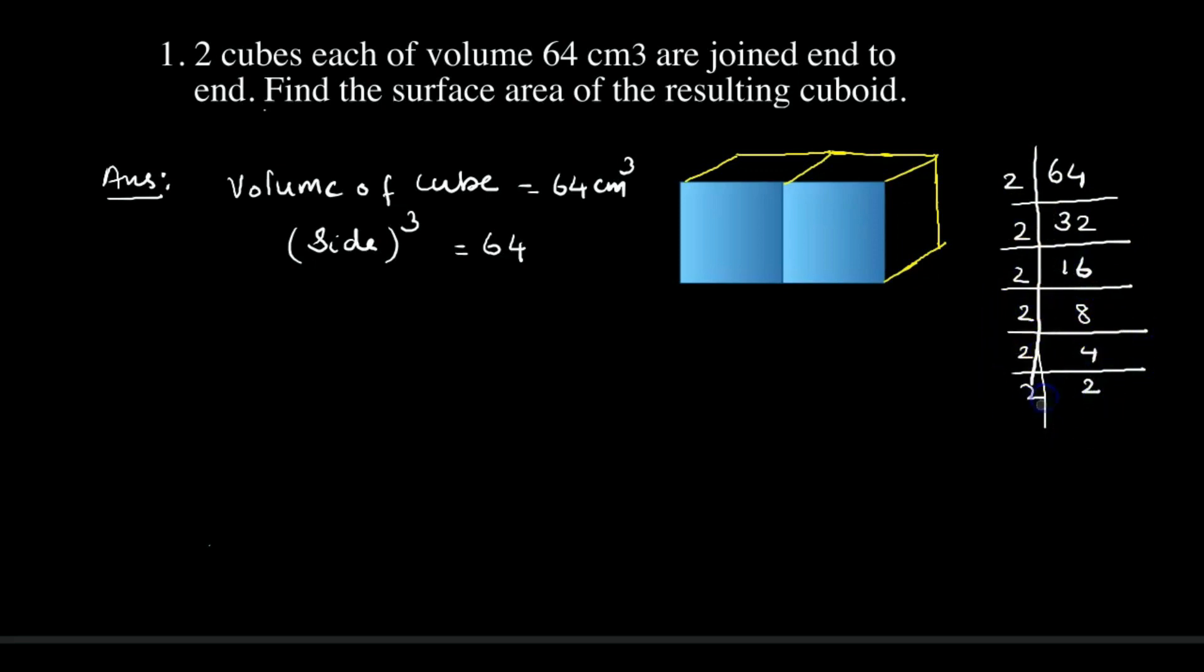So now our next step is grouping, so we get 2 into 2. The final answer: side³ equals 4³. So when you find the cube root of 64, we get 4. So side equals 4 centimeter. This is the length of the cube.